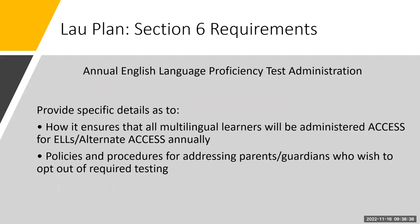Lau Plan Section 6 requirements: all multilingual learners in Maine public schools, as well as publicly funded multilingual learners in non-public schools, must be administered ACCESS for ELs or alternate ACCESS as applicable each year. In Section 6, an LEA provides specific details as to how it ensures that all multilingual learners will be administered the ACCESS for ELs or alternate ACCESS annually, and the policies and procedures for addressing parents and guardians who wish to opt out of required testing.